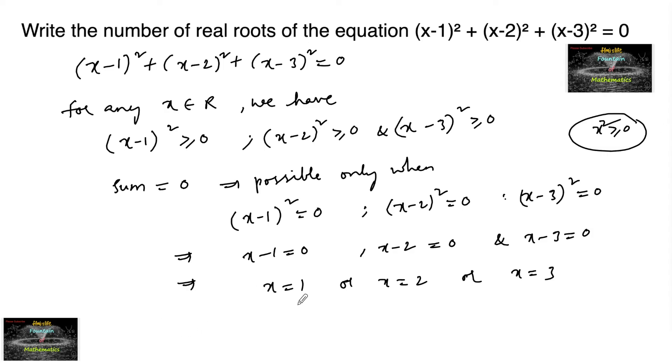So x is equal to 1 is not satisfying. x is equal to 2 does not satisfy and x is equal to 3 also does not satisfy. None of them satisfies the given equation.